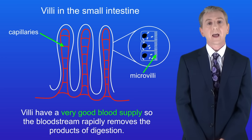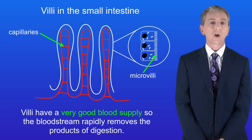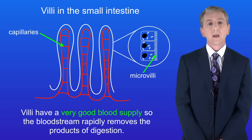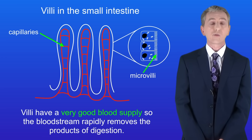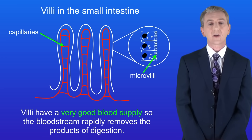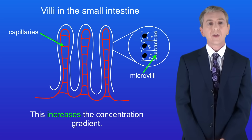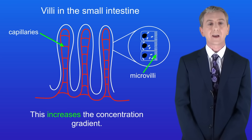Villi have a very good blood supply so the bloodstream rapidly removes the products of digestion and this increases the concentration gradient.